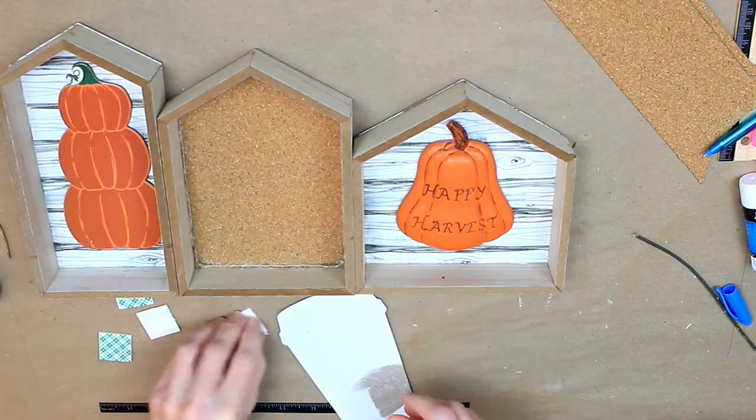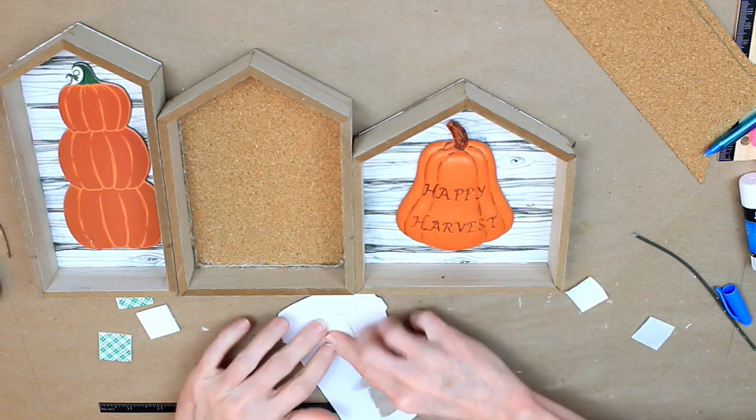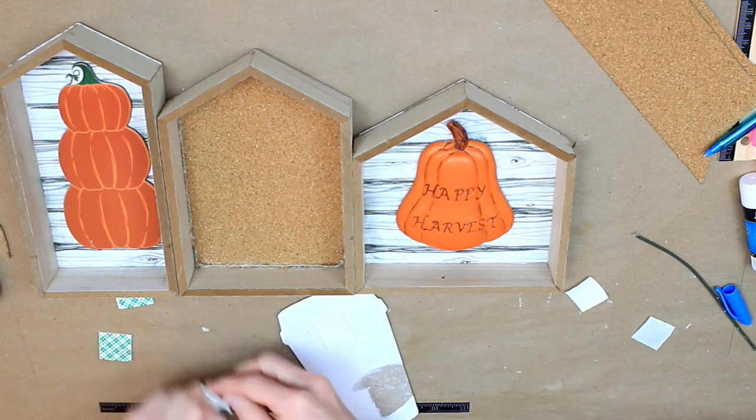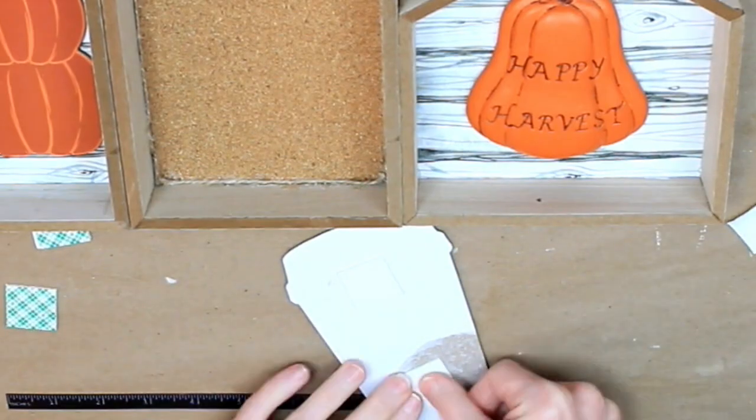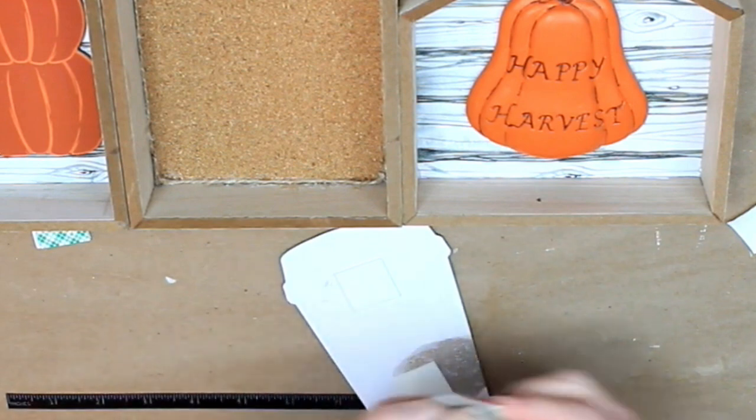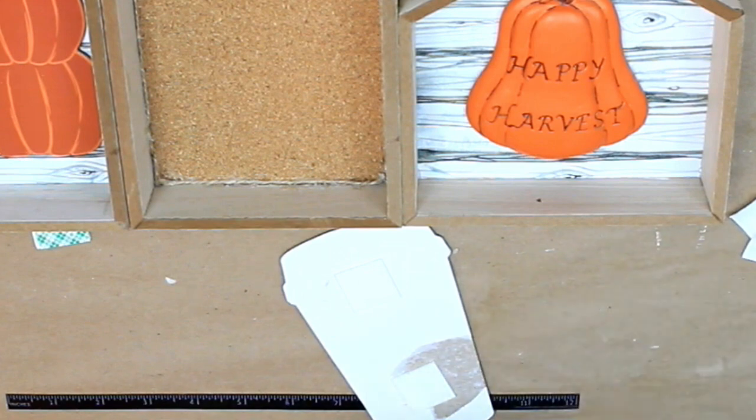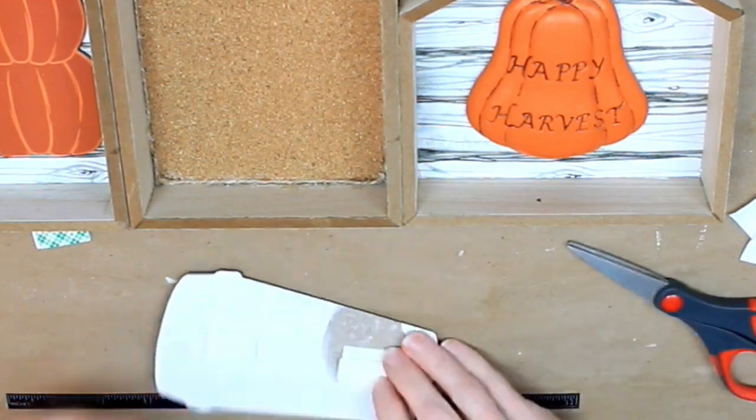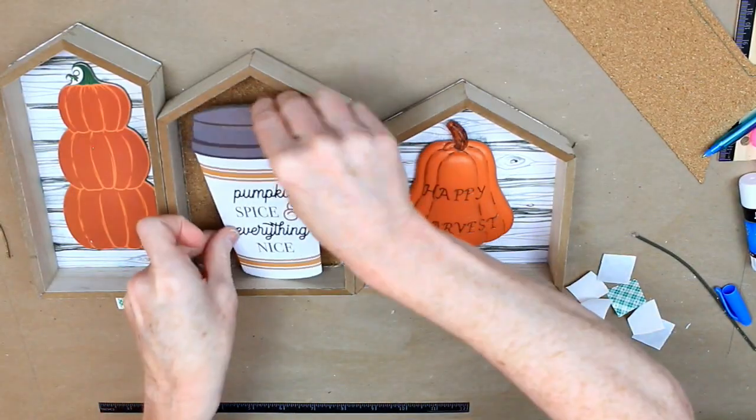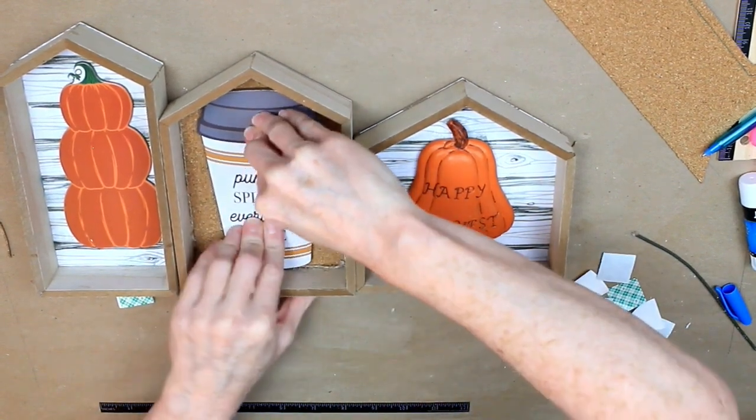So I'm going to take the pumpkin spice cup, and I have some of these foam dimensional stickers. They're by 3M, but you can get something like this at Dollar Tree. And I'm just going to layer them because I want them to stand up off of the background, so I'm going to layer two. Two on the top, two on the bottom, and that's going to give it a little depth when you put it into the frame.